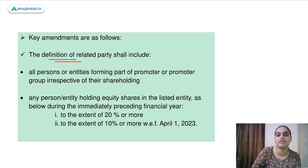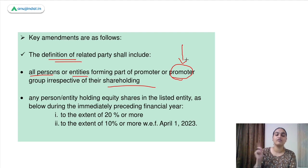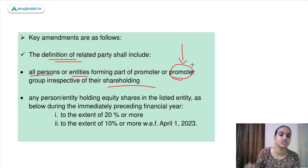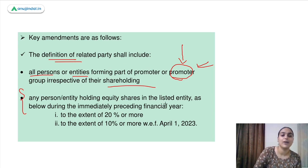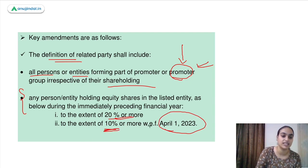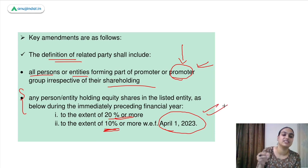As per the amendment, the new definition of related party will include all persons and entities forming part of the promoter group, irrespective of their shareholding. So whoever is a promoter of the firm, regardless of their shareholding, will be considered a related party. Additionally, any person or entity holding equity shares of 20% or more — and from 1st April 2023, 10% or more — will also be considered a related party.